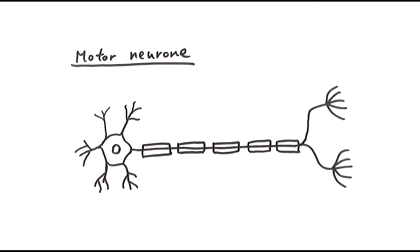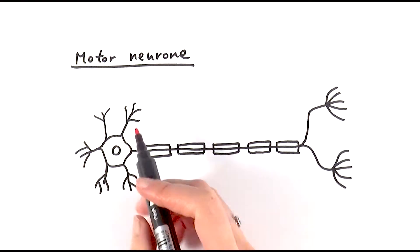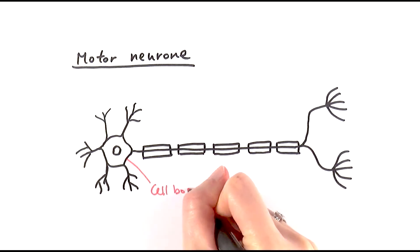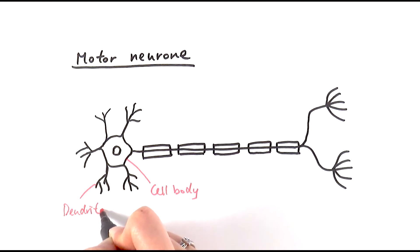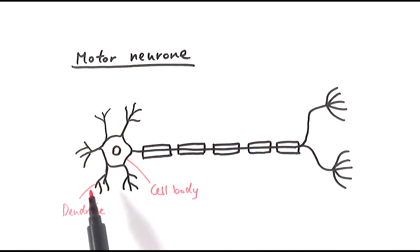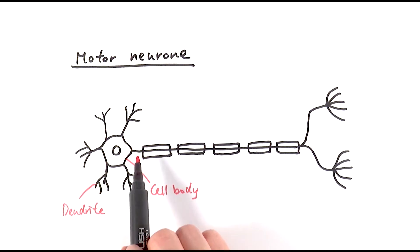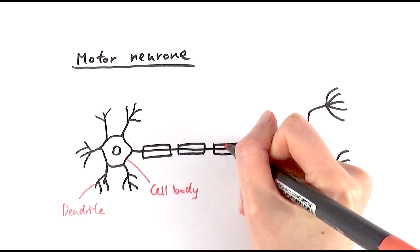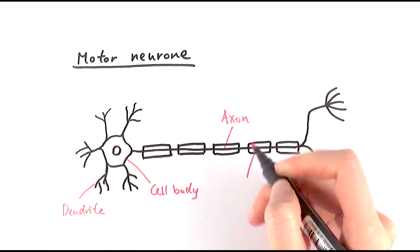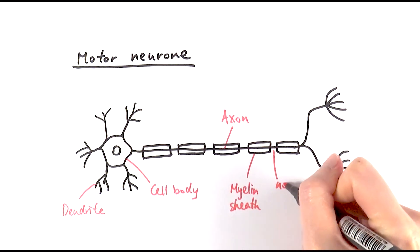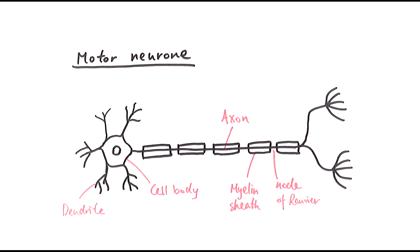Now for the motor neuron. One key distinction is that the motor neuron has its cell body at the beginning of the neuron. All the branches around it are dendrites, which receive the impulse from the relay neuron or the central nervous system. The signal passes through the dendrites into the cell body, then along the axon — the part after the cell body. Again, we have branches of the axon, the myelin sheath, and the nodes of Ranvier in between, which speed up nerve impulse transmission.